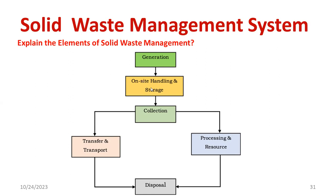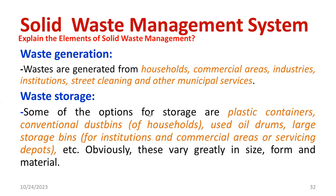The second element is called on-site handling and storage. For storage, you can see plastic containers, conventional dustbins, oil drums, and storage bins. These are different types of waste storage systems designed based on size and volume. The material is also very important — what kind of waste you are going to collect determines the storage. Some metal-type waste is very corrosive, so while collecting that particular waste you should be very careful.